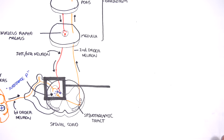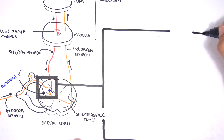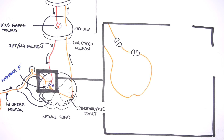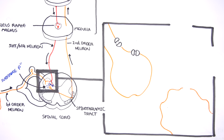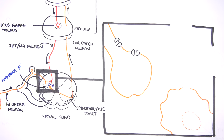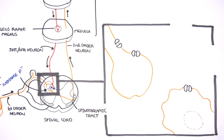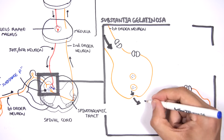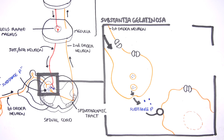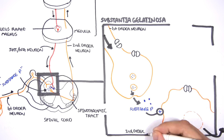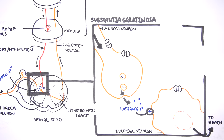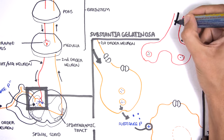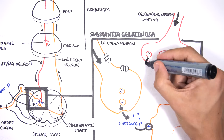The dorsal horn of the spinal cord is a pretty important area — we can call it a gate, so gate control of pain. If we zoom into this area, it can be referred to as the substantia gelatinosa. Here we have the first-order neuron synapsing with the second-order neuron. An action potential causes vesicles to release substance P into the synaptic cleft, stimulating the second-order neuron to propagate an impulse up to the thalamus via the spinothalamic tract. Coming down from the medulla is the serotonergic noradrenergic neuron from the descending pathway, which releases serotonin and noradrenaline.